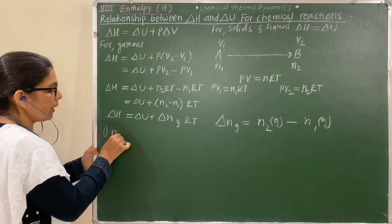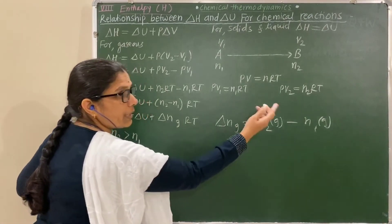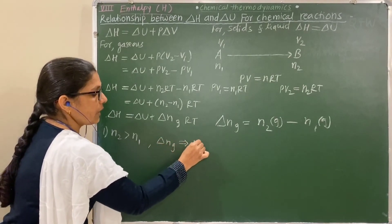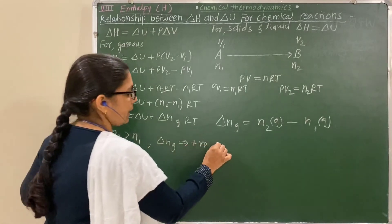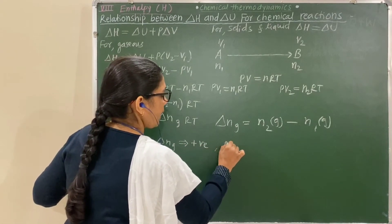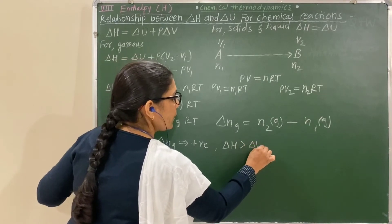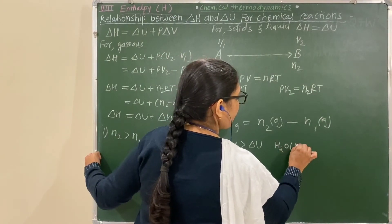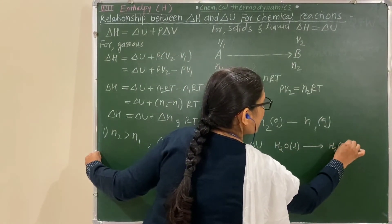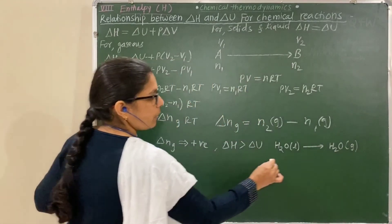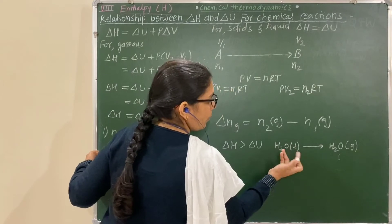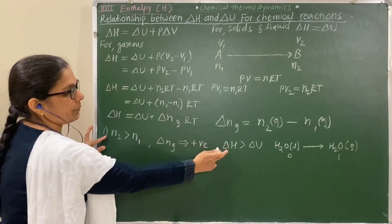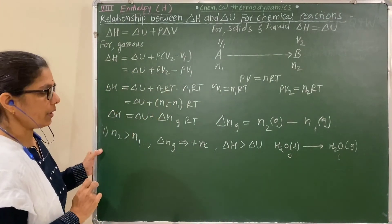First, if N2 > N1, then ΔNg is positive, so ΔH > ΔU. For example, water (liquid) converting to water vapour (gas): N2 = 1 mole of gas, N1 = 0 (no gaseous reactant). So N2 > N1 and ΔH > ΔU.